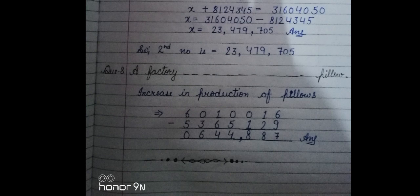Next: a factory produces this many pillows in a particular year and this many pillows in the following year. Find the increase in production of pillows. Now there's a company that makes pillows. In one year they're making 53,65,129, and next they're making 60,10,016. So they're asking: how much more production happened? Find the increase in production.